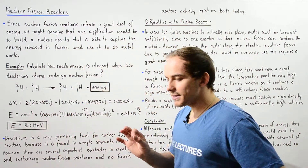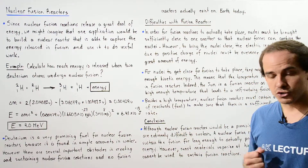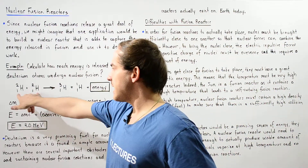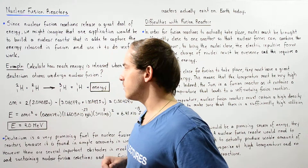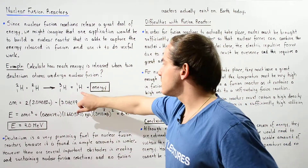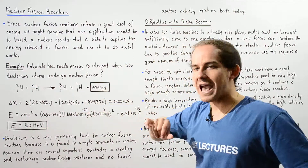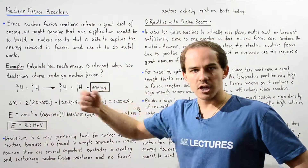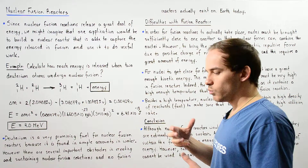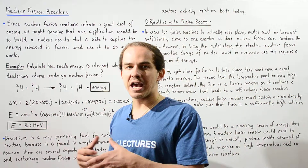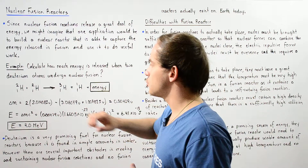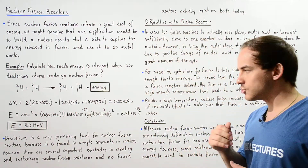One promising type of nuclear fusion reaction is that of deuterium. If we take two deuterium atoms, we can produce a tritium atom as well as a single hydrogen atom, releasing a certain amount of energy. We want to calculate how much energy is released in this single nuclear fusion reaction.